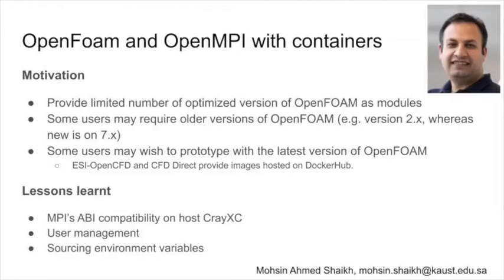Recently, both the OpenFOAM and CFD Direct organizations maintaining OpenFOAM source have started releasing OpenFOAM as Docker containers hosted on Docker Hub. This is still a work in progress, but when attempting to containerize OpenFOAM 2.4.0 on KSL platforms, we found that MPI in the image needs to be ABI compatible with the host MPI in order to work on Cray XC platforms. Some of the assumptions OpenFOAM makes to set the user environment also need to be managed — for example, on Shaheen, the home file system is not mounted on compute nodes, and OpenFOAM user directory defaults to home. Sourcing the OpenFOAM environment before using it during runtime needs to be managed while building the image, which was not straightforward and required doing manually.